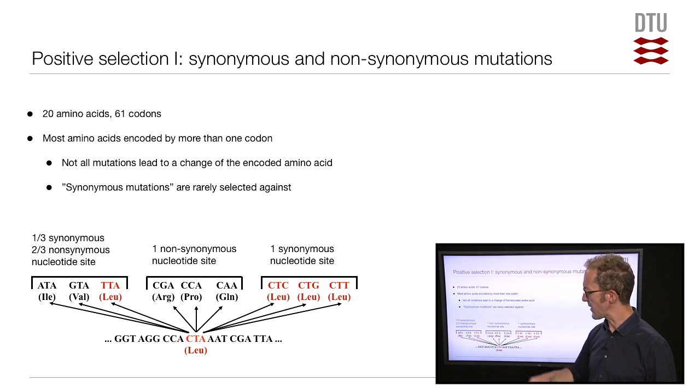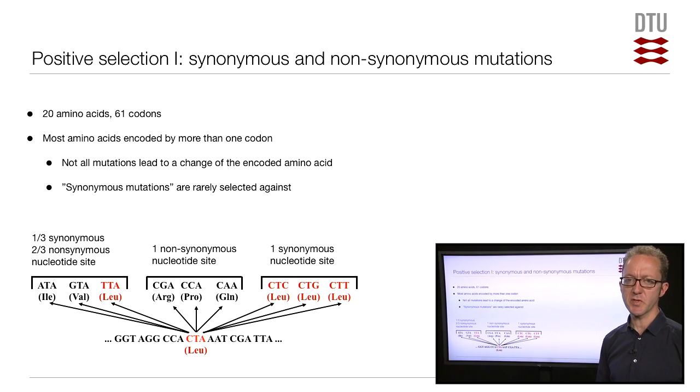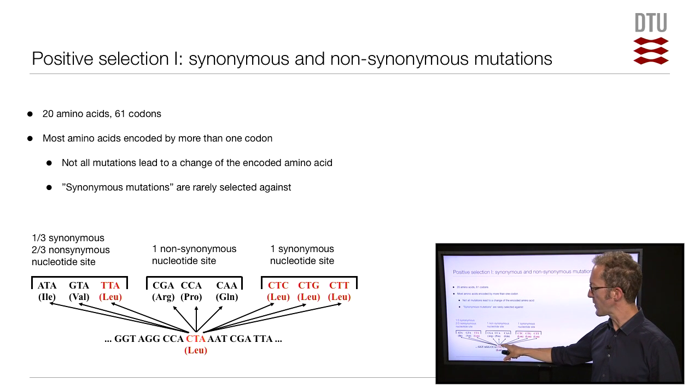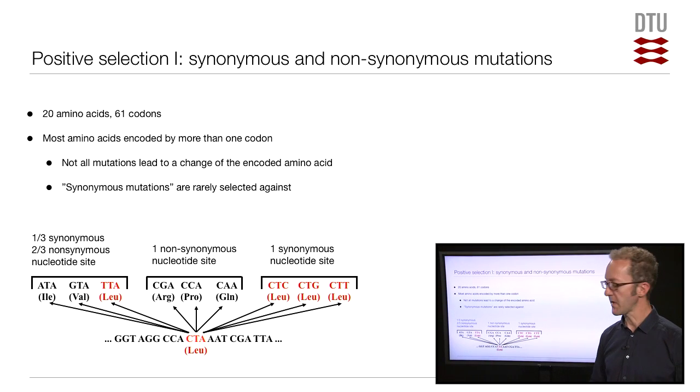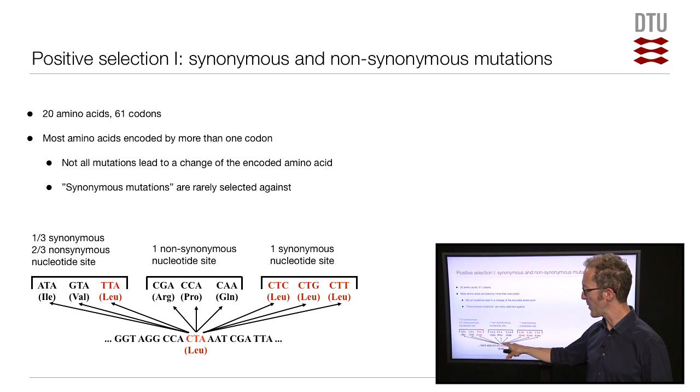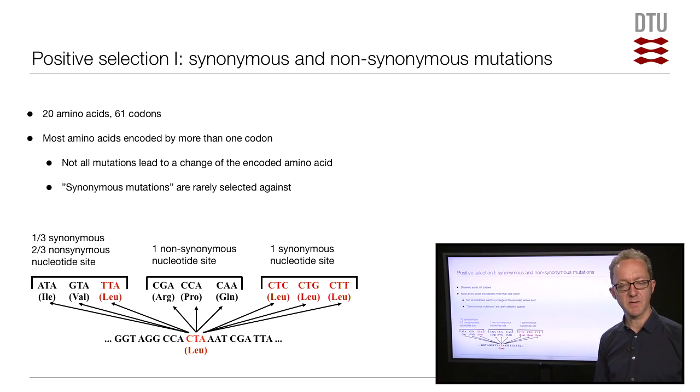Now, if you take the last position, the third codon position in this codon, and consider what could happen to that in terms of mutation, it could mutate, it's an A, and it could therefore mutate to either C, G, or T. As it turns out, all of these three alternative mutated codons also encode leucine. That's how it often is. If you mutate the third codon position, you will often get the same amino acid. We therefore refer to this site as a synonymous nucleotide site. No matter what mutation hits this particular nucleotide site, it won't change the amino acid.